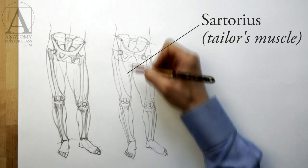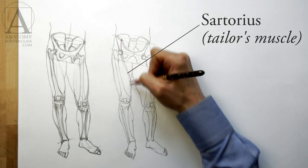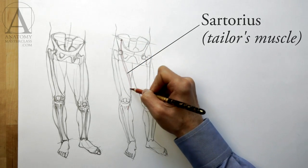In the front portion of the upper leg, there is a muscle called the sartorius. Sartor, in Greek, means tailor. This is why the muscle is also referred to as the tailor's muscle.